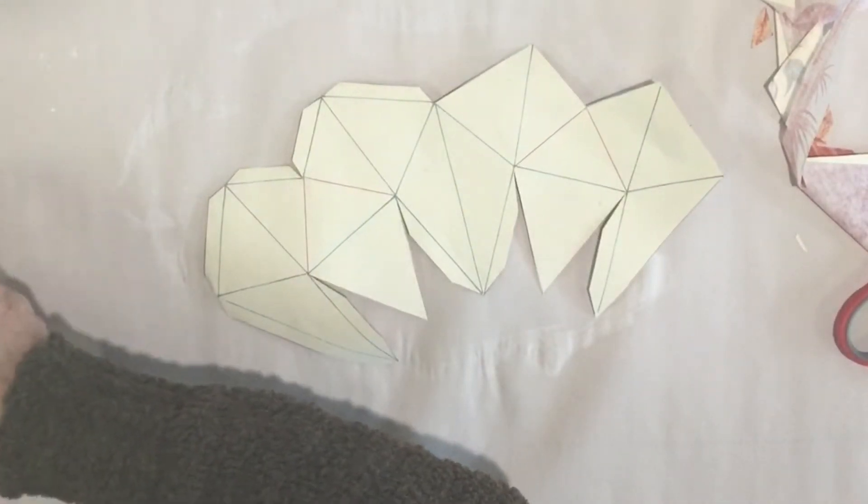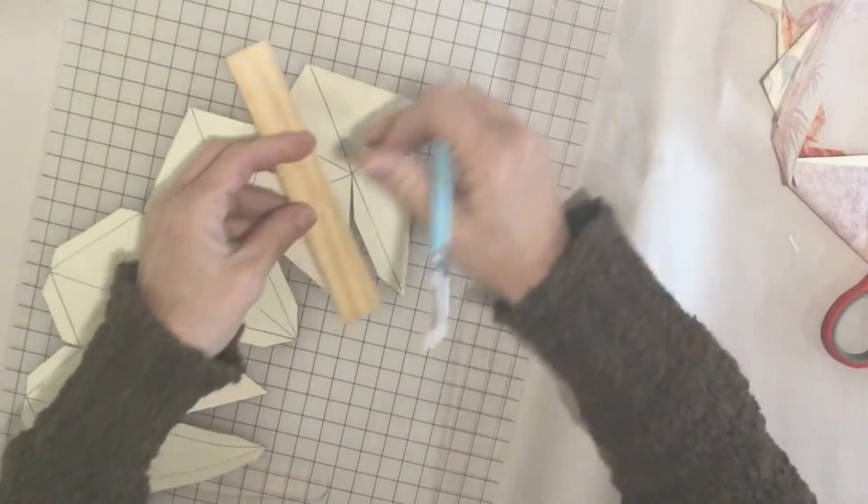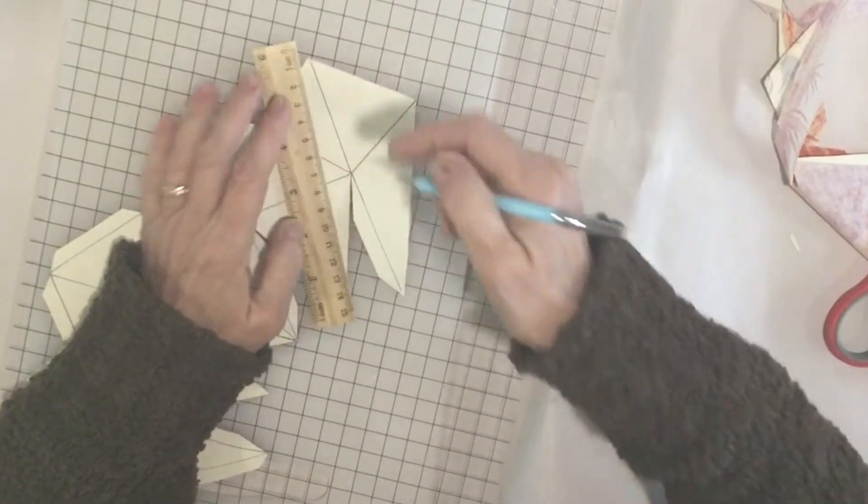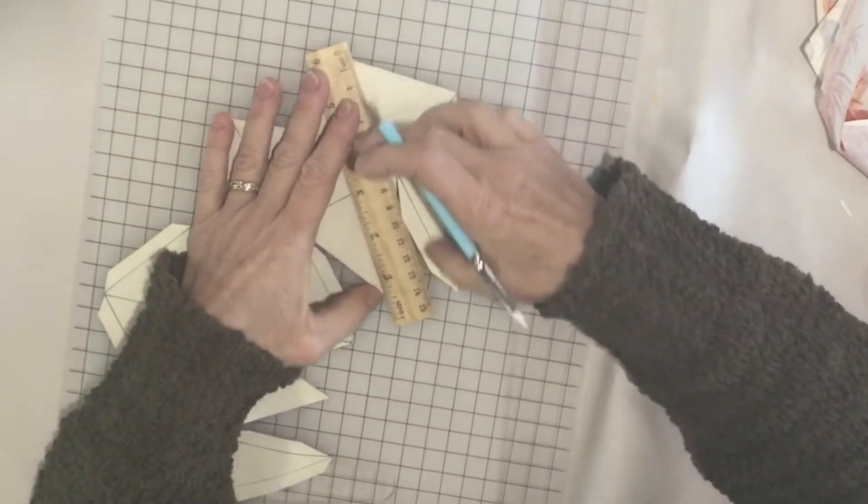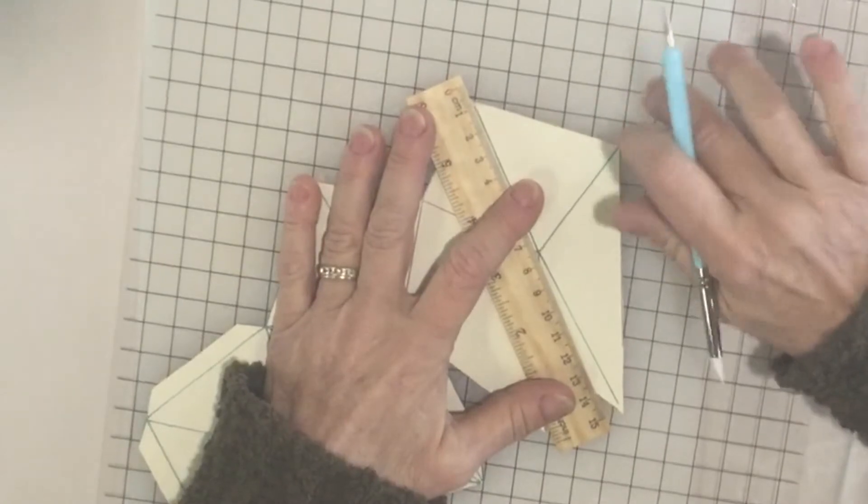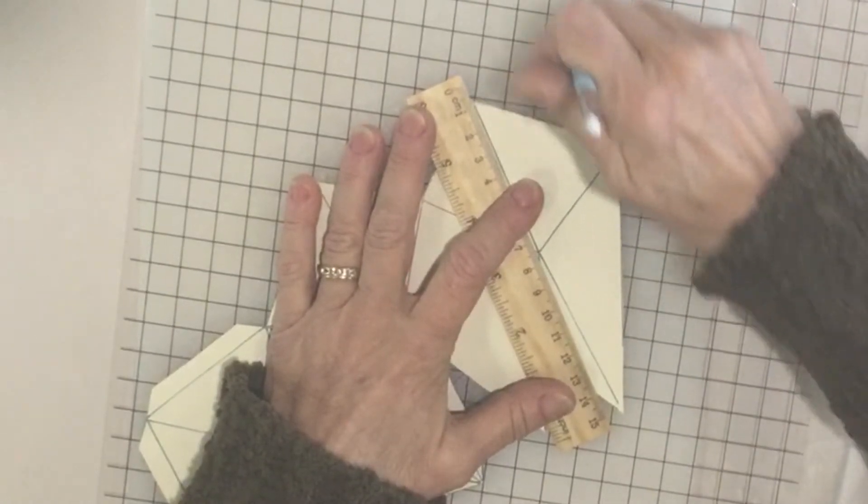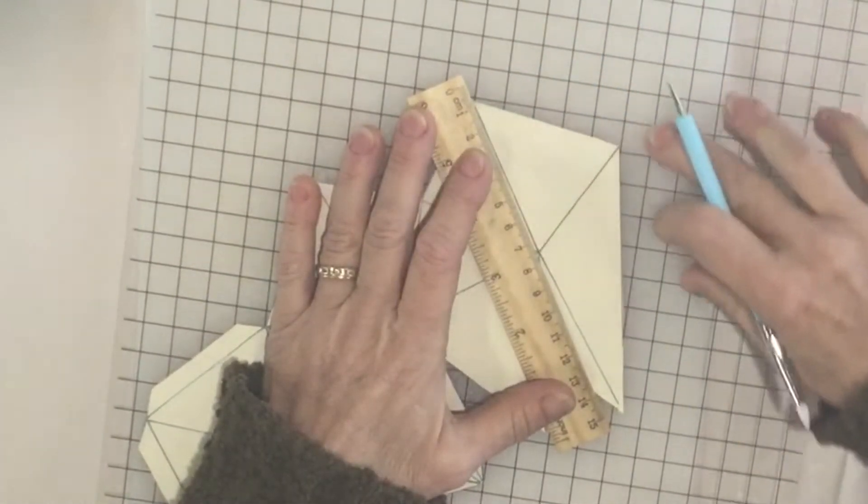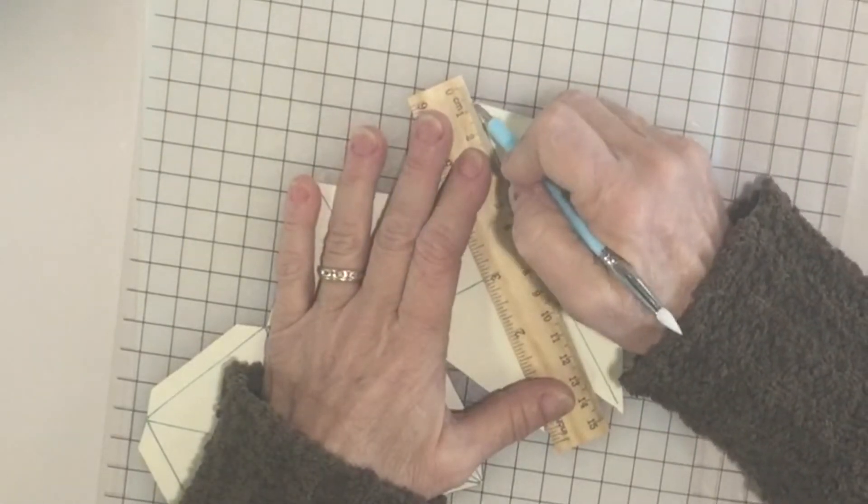When you have this cut out, what we're going to do next is score on these lines. You could use a scoreboard but I think for this it's almost easier just to use a straight edge and score where all the lines are. I just have a cutting board under here because you want something with some sort of cushion that you can push into and not necessarily on your wood table.